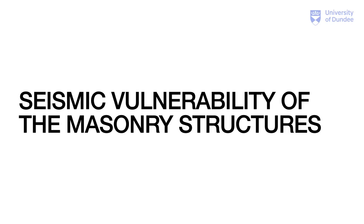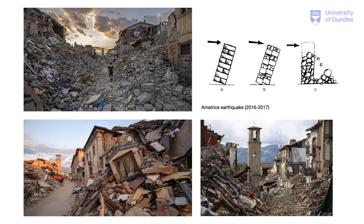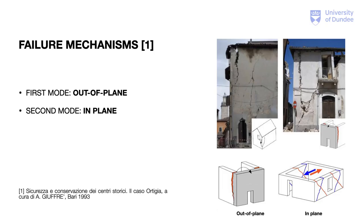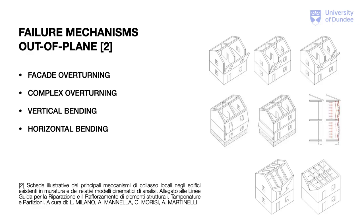As known, masonry structures populate European historic centers. Being long-lived and of great interest to the public, they are affected by immense historical and cultural value. However, they present a very weak seismic performance because they are sometimes made with poor materials from the mechanical point of view. Several authors have proposed a classification for the failure mechanisms that can involve them after an earthquake event. I am reporting some pictures representing masonry buildings after a seismic event, classified as first and second mode.